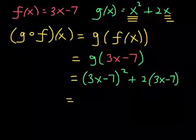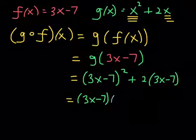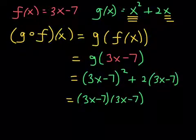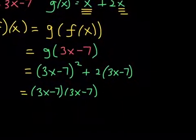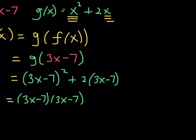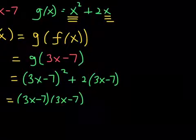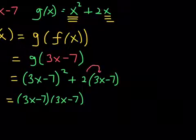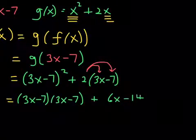Alright, so 3x minus 7 quantity squared, we know that means 3x minus 7 times 3x minus 7. And I think I need to move this over a little bit that way. Alright, cool. So let us as well, while we're here, distribute this too. So then this is plus 6x minus 14. Very good.